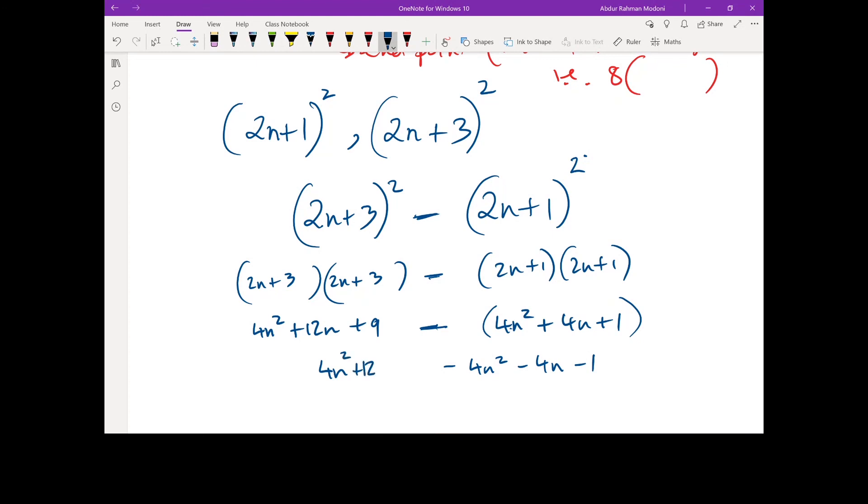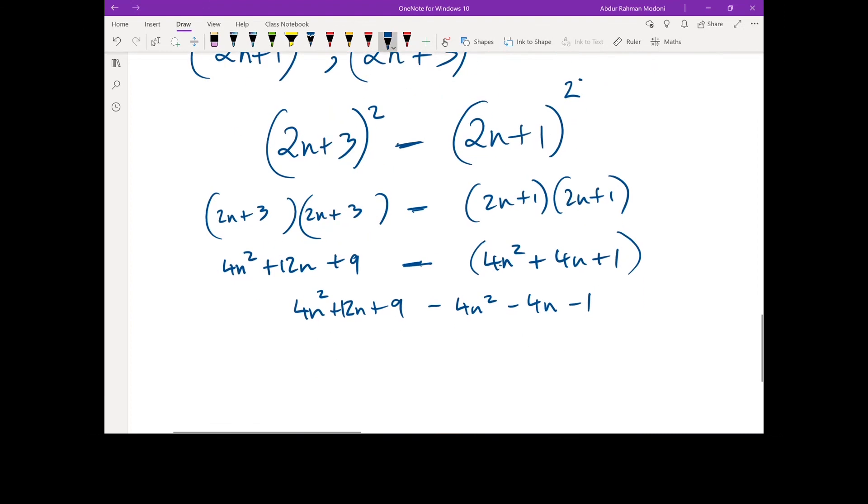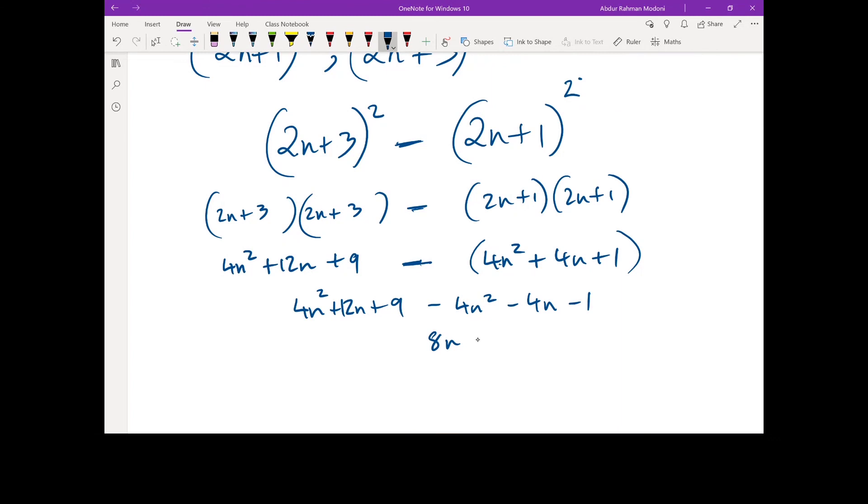4n² + 12n + 9 - 4n² - 4n - 1. Tidy this up. 4n² - 4n² nothing. 12n - 4n, 8n. 9 - 1, 8. Positive eight.